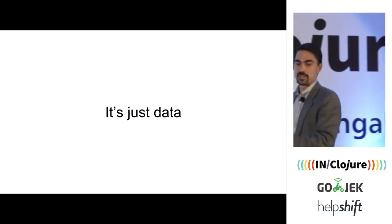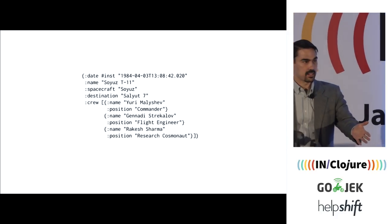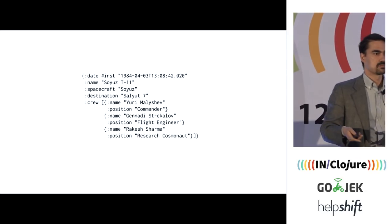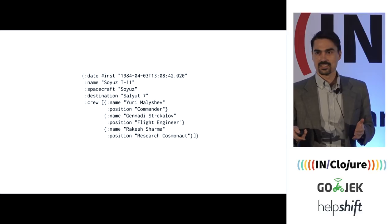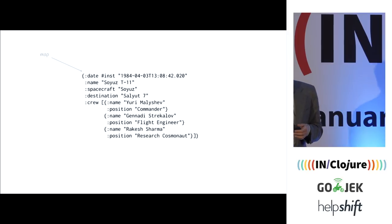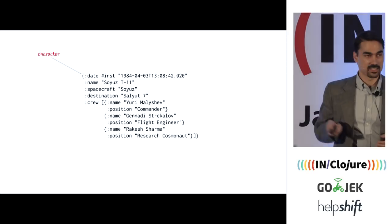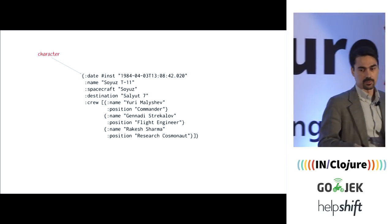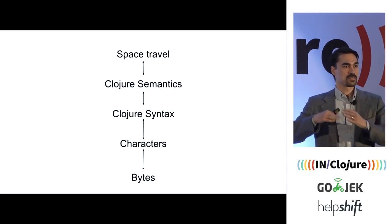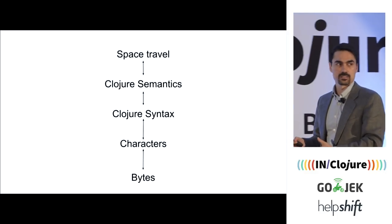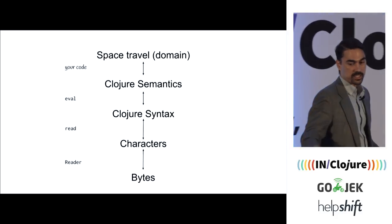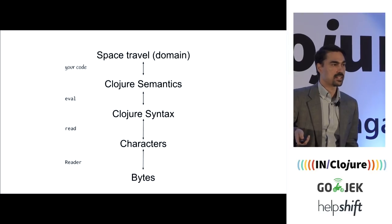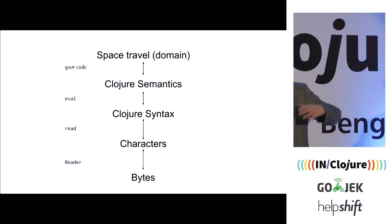It's data and it's got meaning. So just as an example — what's the outer thing? It's a map. But it's also something else: it's a bunch of characters. You can go down further: it's bytes on disc. You put it through a reader to turn bytes into characters; you do a read and it turns into syntax; then you eval it and it turns into Clojure semantics. And then you have all the code that you wrote that makes it at another level of meaning — about space travel.